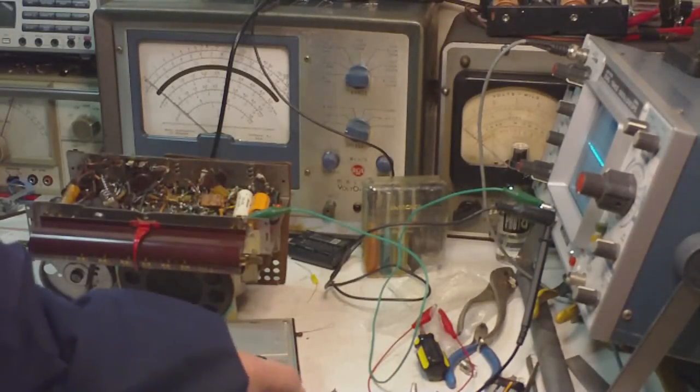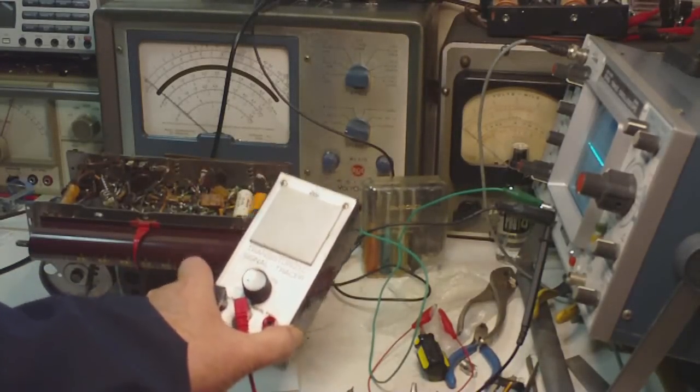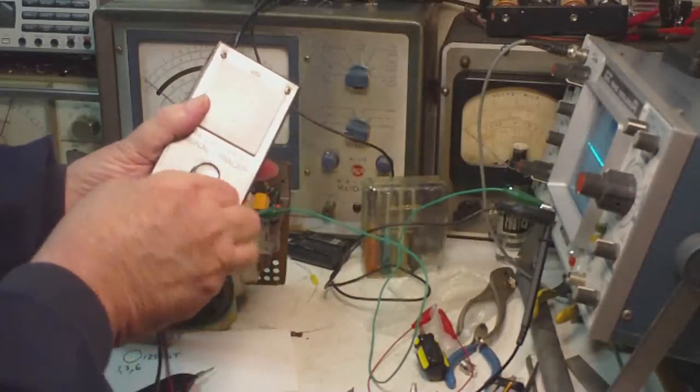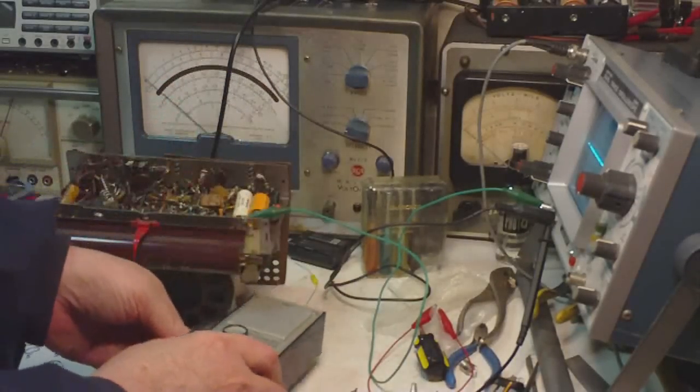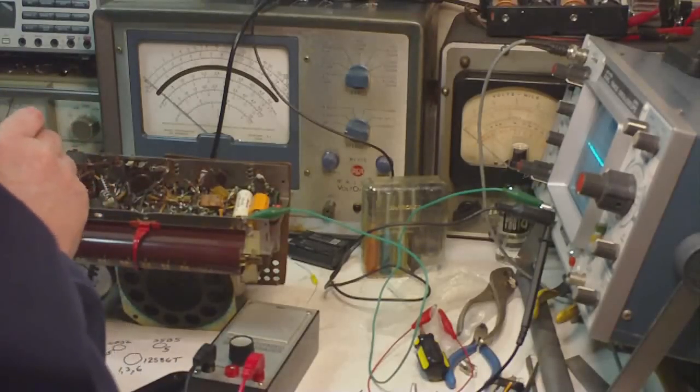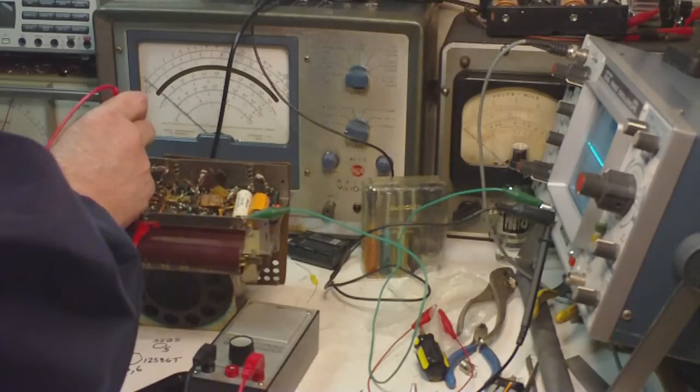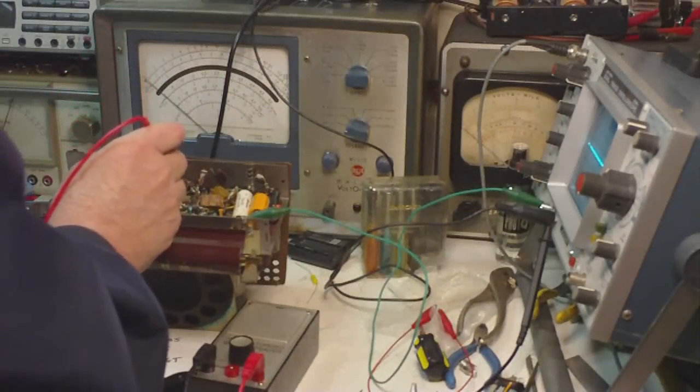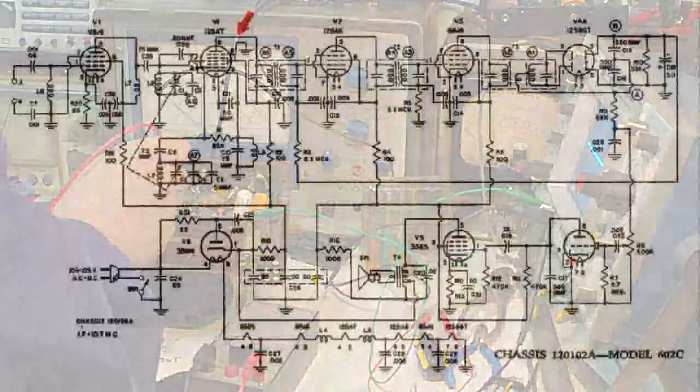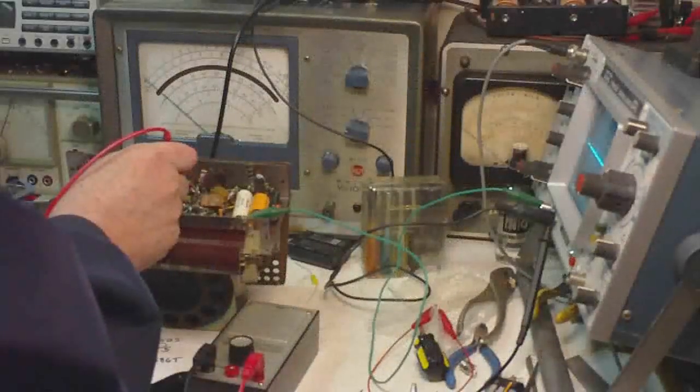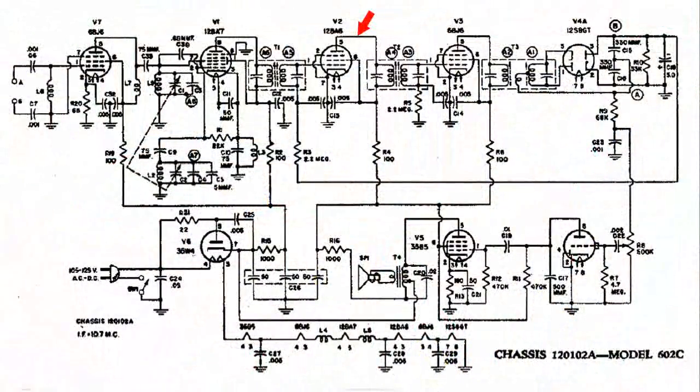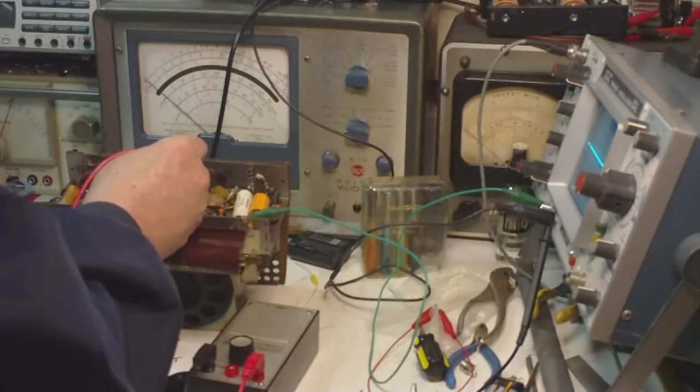Believe it or not, you can use a signal tracer which I'm going to turn on all the way and I'm also going to put this in RF mode. I'm going to go to the same place as pin 5 for the first 6BJ6 and to pin 9 of the 12BA7, don't really hear anything, and then pin 5 of the 12BA6, just barely hear something.